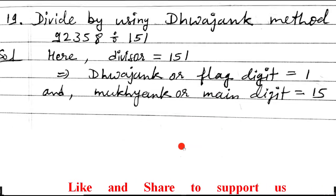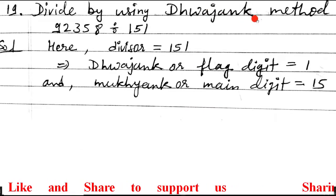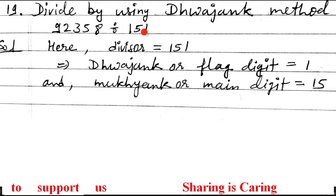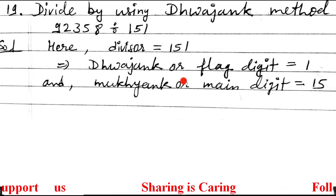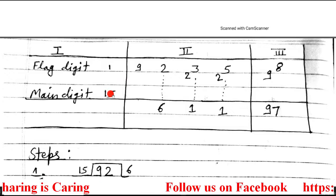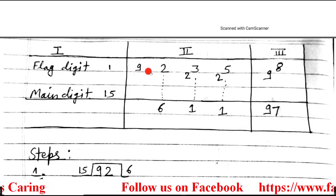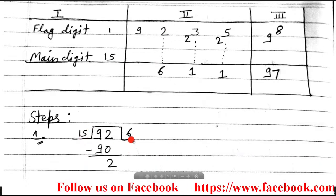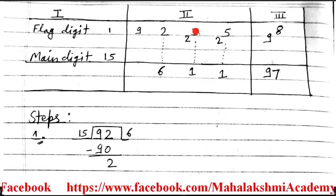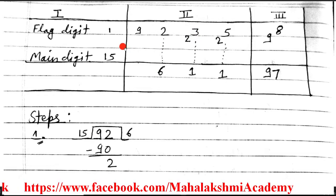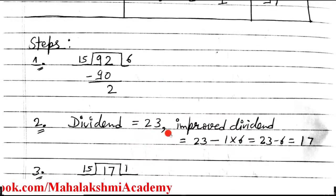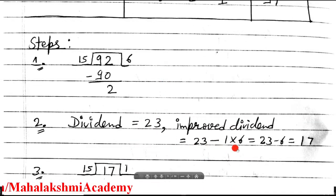Next question is Q19, also by the Dwajang method. Select Dwajang: flag digit is 1, and Mukhyang is 15. Start the division. First number is 9, which is less than 15, so we can't divide. Take 92 instead. 92 divided by 15 is 6, since 15×6=90, remainder 2. Enter 6 and 2. The dividend is 23. Improved dividend: 23 minus flag digit 1 × quotient 6 = 23 minus 6 = 17. Since it is positive, move further.